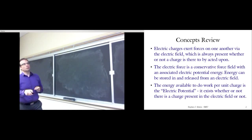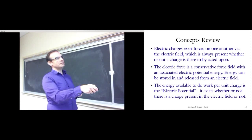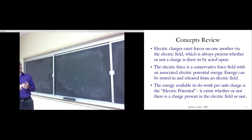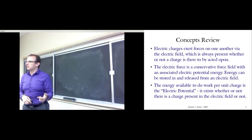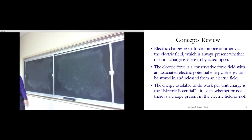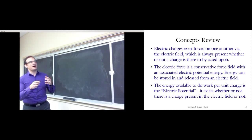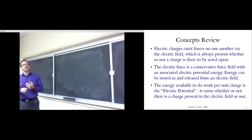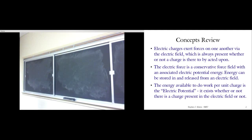The energy available to do work per unit charge is what's called the electric potential. It's often very easy to confuse electric potential or electric potential difference with electric potential energy. This is an unfortunate nomenclature, but we're stuck with it — it's the convention that physics uses. There's potential energy and there's potential, and potential is the energy per unit charge that's available in the field at some point in space.